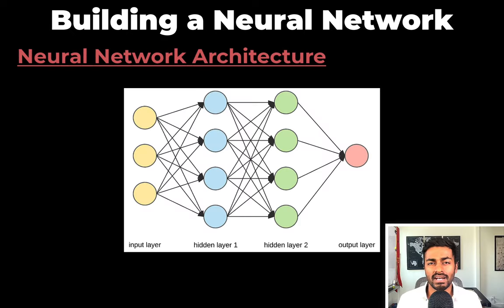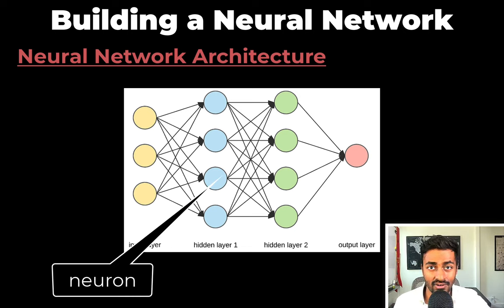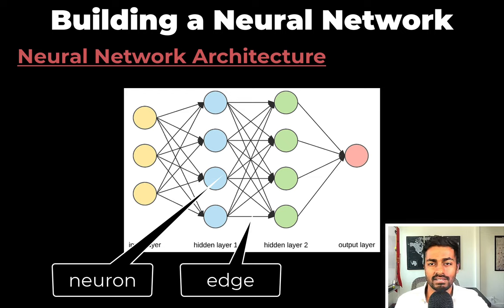Now in this second pass, I want to describe different concepts in neural networks, starting with their architecture. So this is a diagram of a neural network. Each circle is a neuron that has some inputs and outputs.